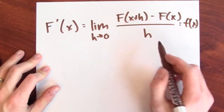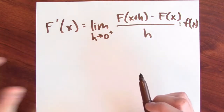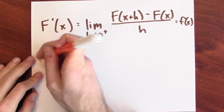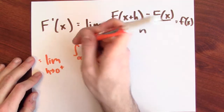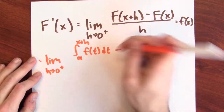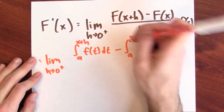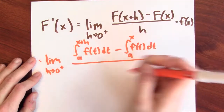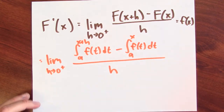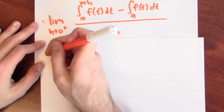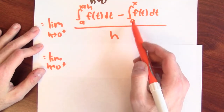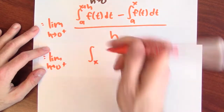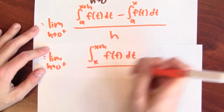To make matters a little bit easier, I'm only going to consider the situation when h is positive. Let's rewrite that difference of two accumulation functions as a single definite integral. This is the limit as h approaches zero from the right of F(x+h) — the integral from a to x+h of f(t) dt — minus F(x), which is the integral from a to x of f(t) dt, all over h. This difference of integrals can be written as a single integral: the integral from x to x+h of f(t) dt, all over h.